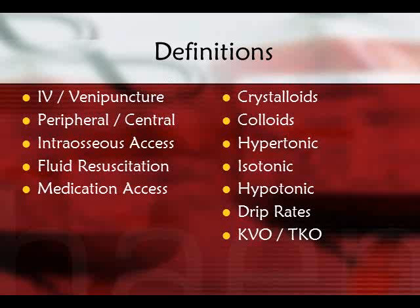A hypertonic solution such as dextrose 50% is very concentrated — it's going to pull water from surrounding tissues into it to dilute it. Hypotonic solutions on the other hand typically have extra water to give away, so they will start to flood other tissues around them. Drip rate refers to how quickly we give an IV infusion, and KVO or TKO — keep vein open or to keep open — are terms we've mentioned previously.